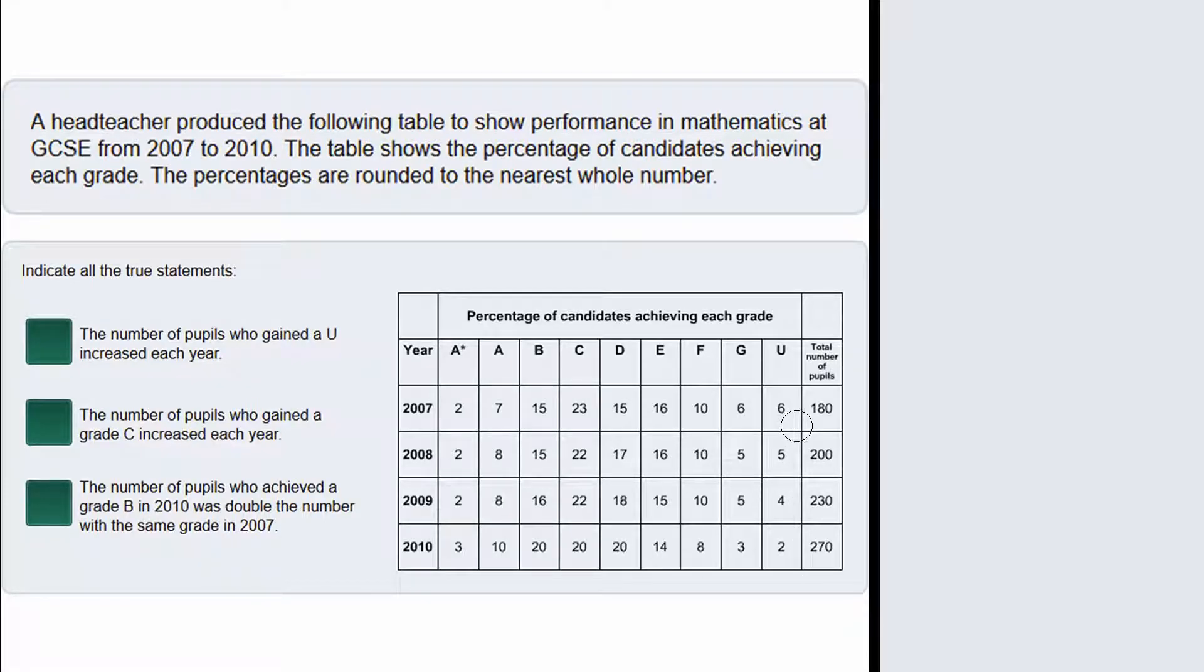What this means is that in 2007, 6% of the 180 pupils got a grade U. So we need to do 0.06 multiplied by 180 to find 6% of 180 and that gives us 10.8. Now we do the same for 2008. We have 5% of 200. So we do 0.05 multiplied by 200, that gives us 10. We can see that the number of people who gained a U decreased because between 2007 and 2008 it decreased. So this means that statement A is false.